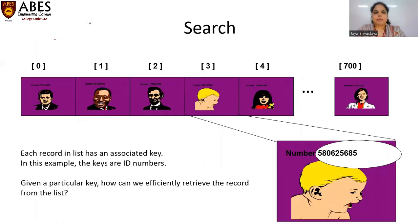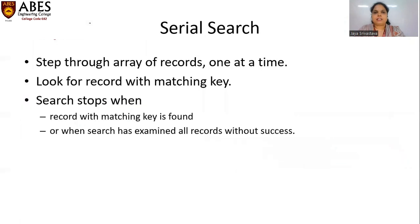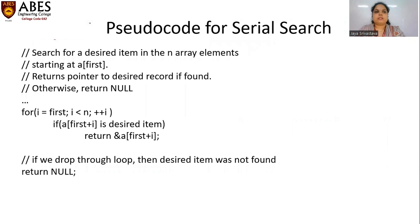Here is an example. The keys are ID numbers, and given a particular key, how can we efficiently retrieve the record from the list? There are 700 records, so finding a particular ID is a difficult task. In serial search, we step through the array of records one at a time, looking for the record with a matching key. The search is stopped when a record with a matching key is found, or when the search has examined all records without success.